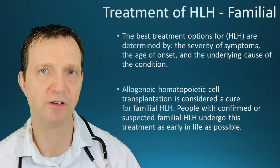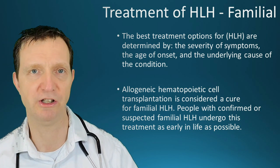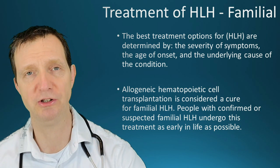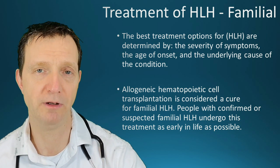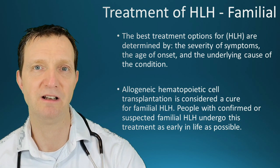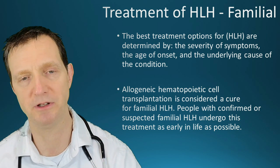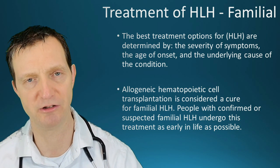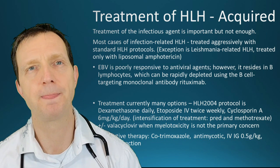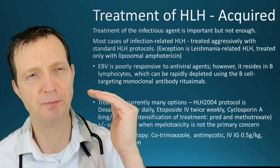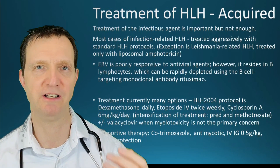The best treatment options for HLH are determined by the severity of symptoms, age of onset, and underlying cause. For familial HLH you effectively need a stem cell transplant to be cured, and ideally this treatment should happen as quickly as possible — with chemotherapy to wipe out the immune system first, then the transplant. For acquired HLH, you treat it as aggressively as you can using standard HLH protocols.